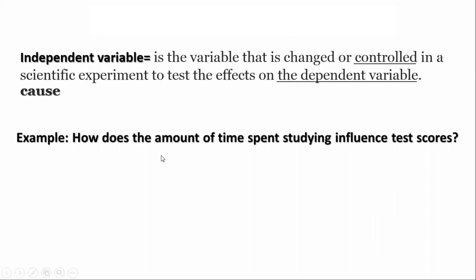For example: how does the amount of time spent studying influence test scores? The amount of time spent studying is the independent variable — it is the one you change or control.